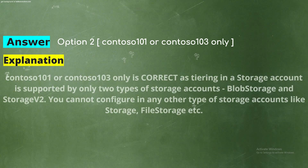Explanation: Contoso101 or Contoso103 only is correct, as tiering in a storage account is supported by only two types of storage accounts — Blob Storage and Storage V2. You cannot configure it in any other type of storage accounts like Storage File Storage, etc.